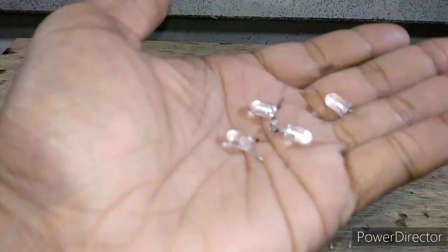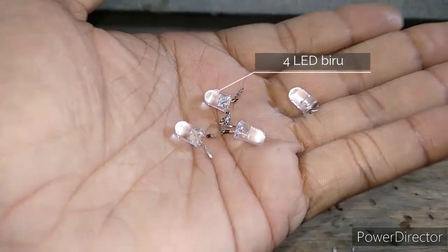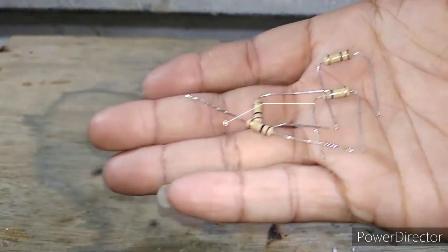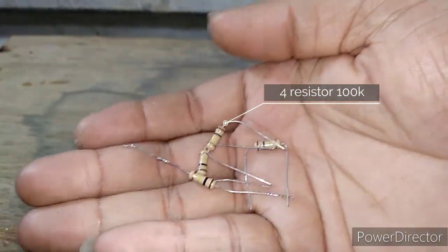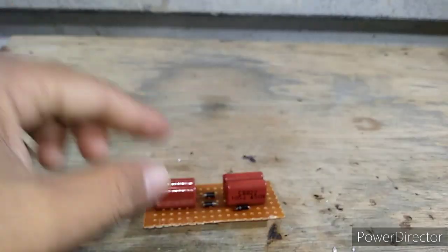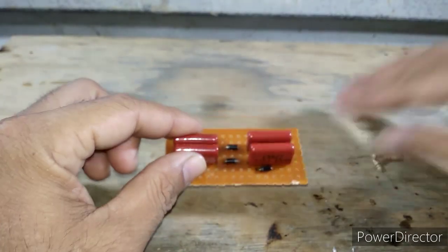Lalu saya siapkan empat buah LED warna biru dan empat buah resistor 100 kiloohm. Saya pasang untuk resistor terlebih dahulu.